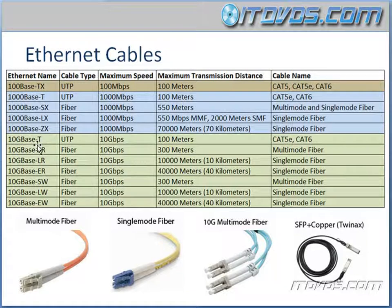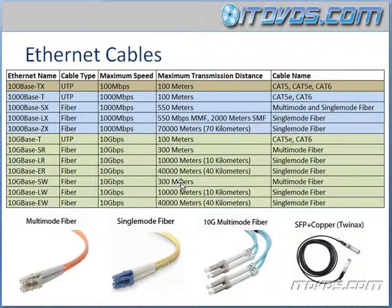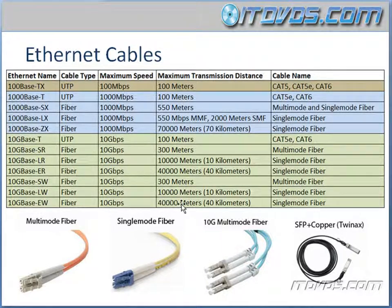For example, the 10GBaseT and SR only go 100 meters and 300 meters. Same with your SW, 300 meters. And your LR, ER, LW, and EW go longer distances.